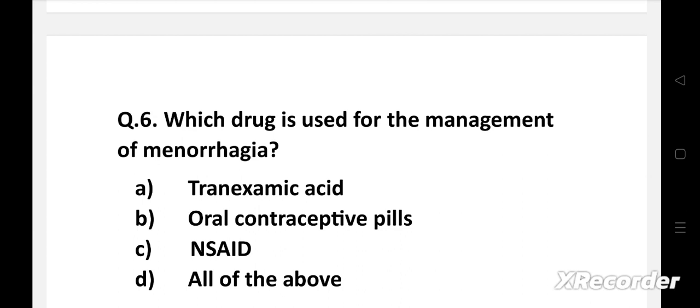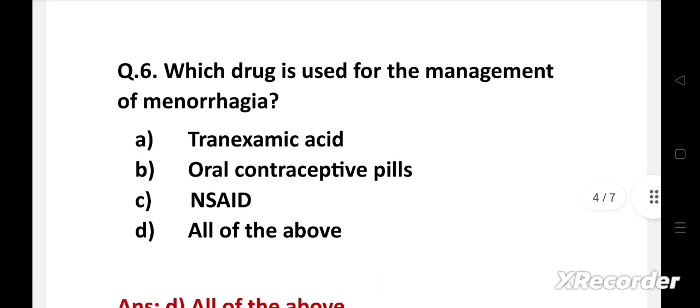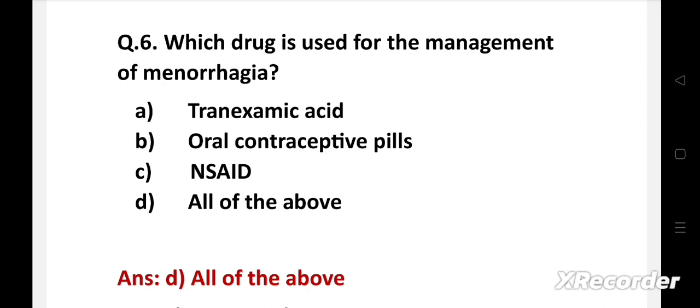Which drug is used for the management of menorrhagia? Option a: tranexamic acid, b: oral contraceptive pills, c: NSAIDs, d: all of the above. The right answer is option d, all of the above. The drugs used for management of menorrhagia may include non-steroidal anti-inflammatory drugs and NSAIDs such as ibuprofen. It helps to reduce menstrual blood loss and relieves painful menstrual cramps. Tranexamic acid helps to reduce menstrual blood loss and only needs to be taken at the time of bleeding. Aside from providing birth control, oral contraceptives can help to regulate menstrual cycles and reduce episodes of excessive or prolonged menstrual bleeding.